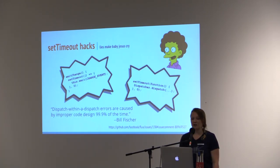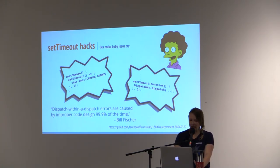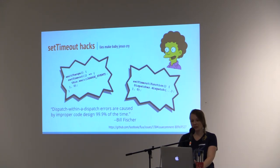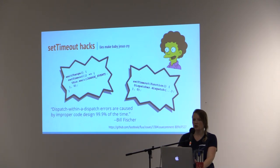According to Bill Fisher, a software engineer at Facebook working with React and Flux, he says that's a hack that should be avoided. Dispatch-within-a-dispatch errors are caused by improper code design 99.9% of the time. Instead of doing the setTimeout, do what you need to do in response to the original action. I think this is most often a reflection of equating actions with setters — they are not the same, he says.